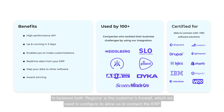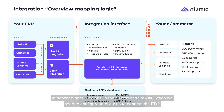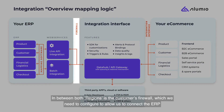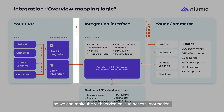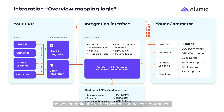In between both regions is the customer's firewall, which we need to configure to allow us to connect the ERP so we can make the web service calls to access information.